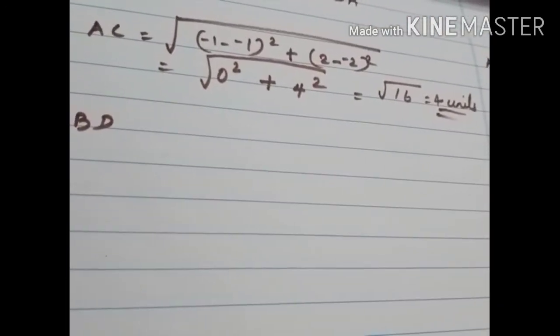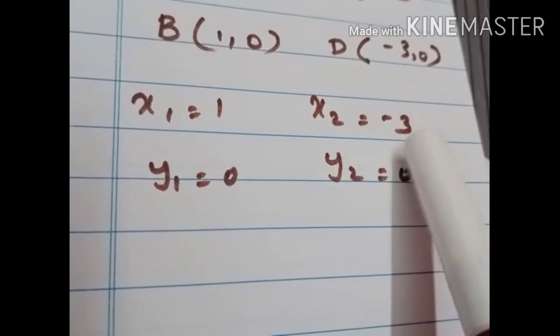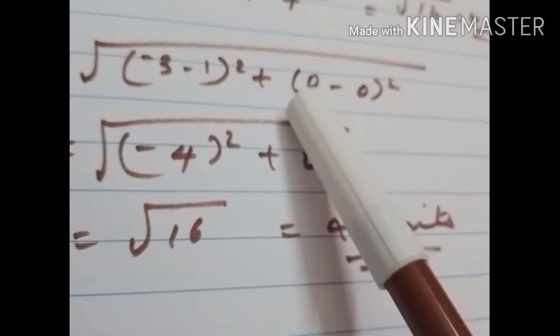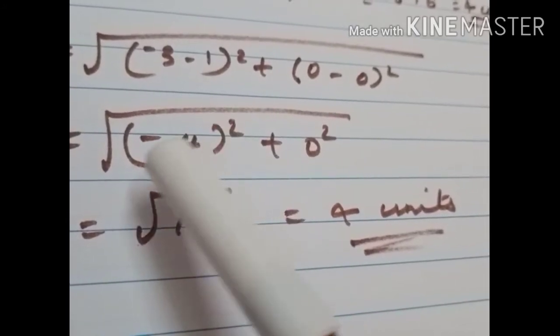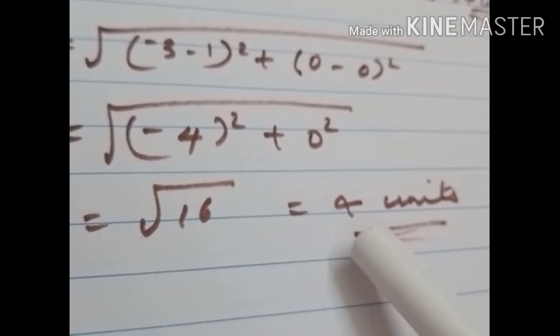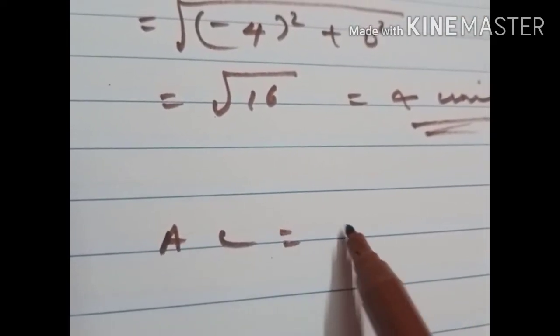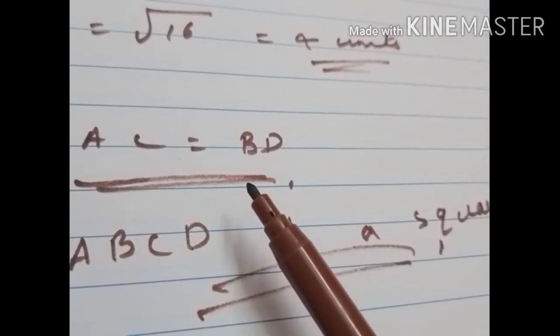For diagonal BD, we consider B(1, 0) and D(-3, 0): x1 = 1, y1 = 0, x2 = -3, y2 = 0. Substituting: root of (-3 minus 1) squared plus (0 minus 0) squared = root of (-4) squared = root 16 = 4 units. Now AC and BD are both equal to 4 units. All sides are equal and diagonals are equal, so ABCD is a square.